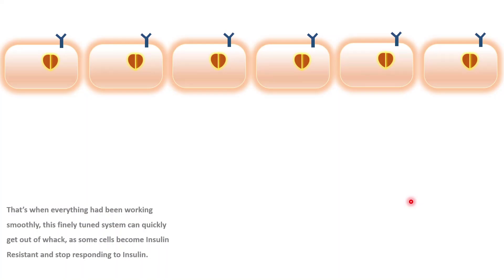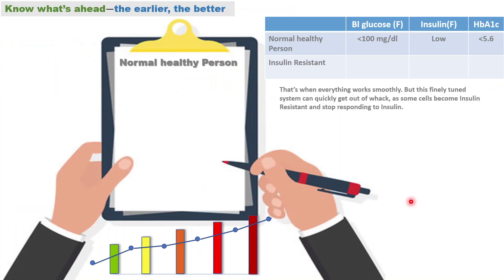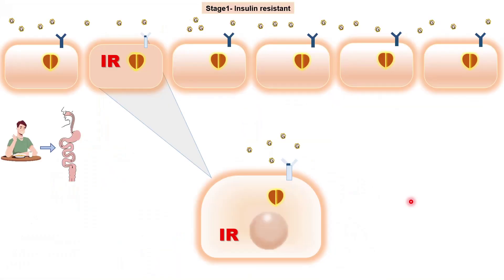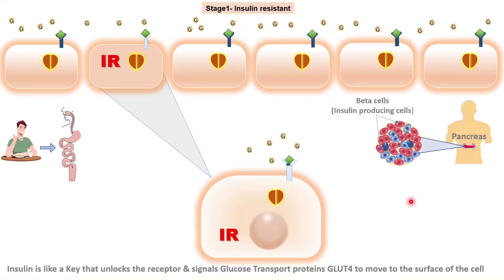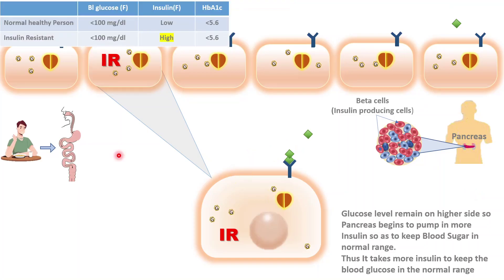When everything has been working smoothly, some of the body cells stop responding to insulin — in other words, the cells are no more sensitive to insulin, or they become resistant to insulin. After meals, blood sugar enters the body, the pancreas makes insulin, insulin binds to the receptors, and sugar enters normal cells but fails to enter the insulin-resistant cells. In this process, glucose level remains on the higher side. So the pancreas begins to pump in more insulin to keep the blood sugar in the normal range. It takes more insulin to keep the blood sugar in the normal range. In this stage of insulin resistance, the level of glucose in the blood does not rise; however, the level of insulin in the blood is high.